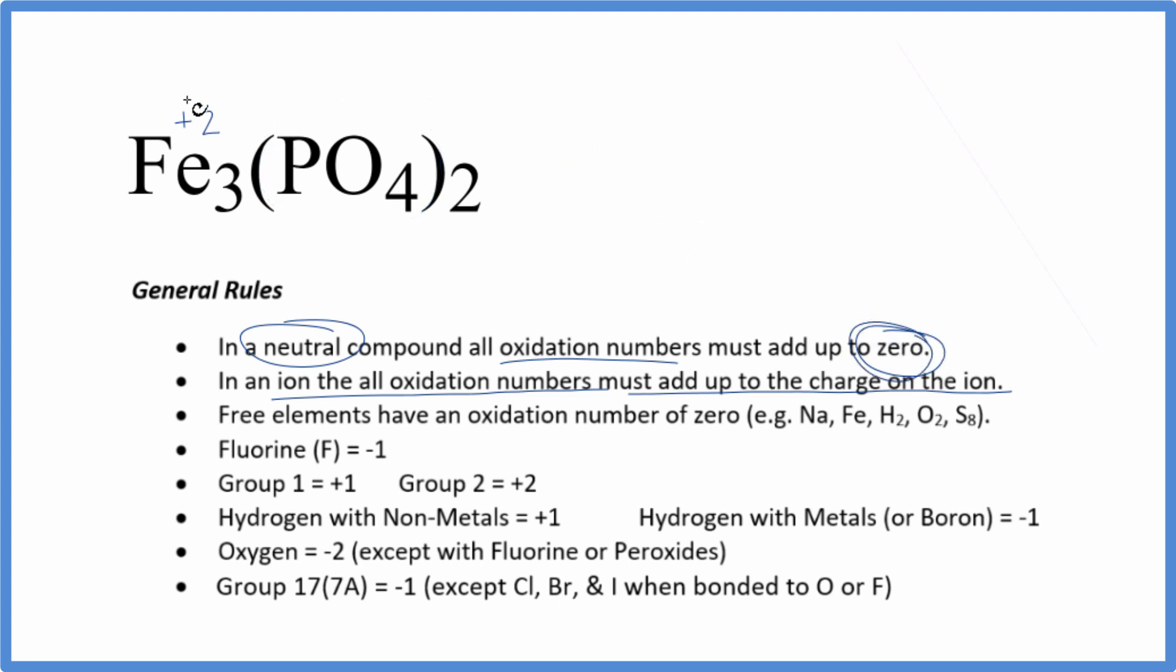So the oxidation number for the iron in Fe₃(PO₄)₂ is plus two. This is considered iron(II) phosphate because of that. If you need to find the oxidation number for the phosphorus in the phosphate ion, there's a link in the description on how to do that.